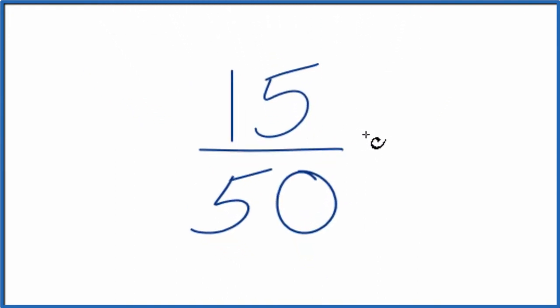We're trying to find another fraction that has the same value, an equivalent fraction, but it's in simplest terms. So what we can do is find the multiple that goes into 15 and 50, and we can divide the numerator and denominator by that. And we're looking for the largest common multiple.